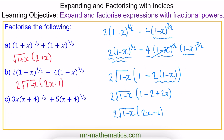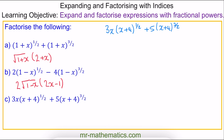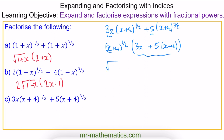For question c, x plus four to the one half is the common factor. Inside the brackets we have a three x term, plus five, and another x plus four. Simplifying the bracket gives the square root of x plus four, multiplied by eight x plus twenty.